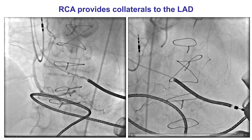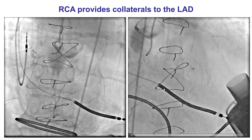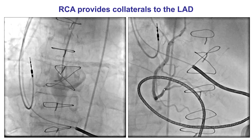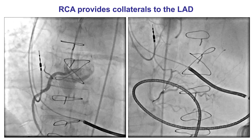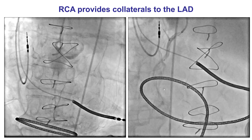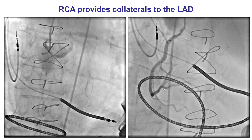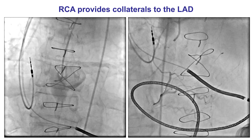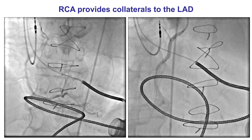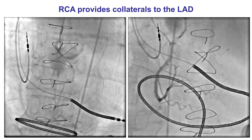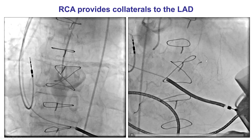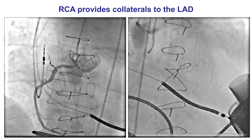Fortunately, the patient remained remarkably stable, which was to a large extent because of the ventricular assist device. We did perform angiography of the right coronary artery that demonstrated non-significant lesions with collaterals going all the way to the LAD.